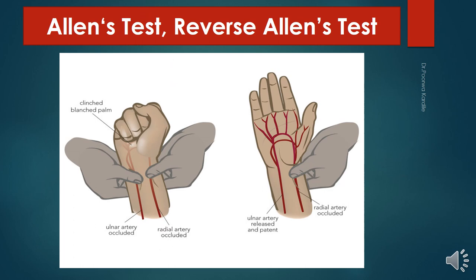This slide is of Allen's test, used to check the patency of the ulnar and radial arteries. First compress the radial artery in front of the wrist and ask the patient to make a tight fist; the palm becomes cold and white. When the patient opens the hand, blood flows into the arches through the ulnar artery and the palm becomes warm and pink, suggesting the ulnar artery is patent. Similarly, patency of the radial artery is checked by compressing the ulnar artery.